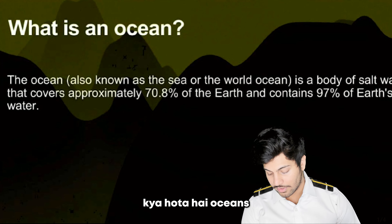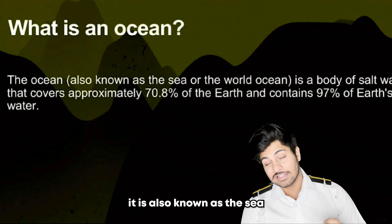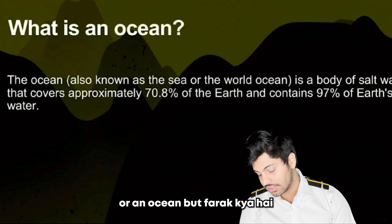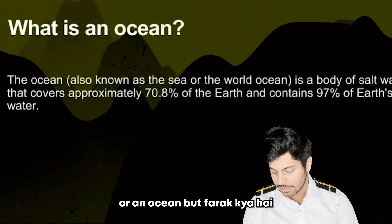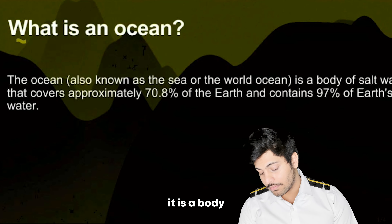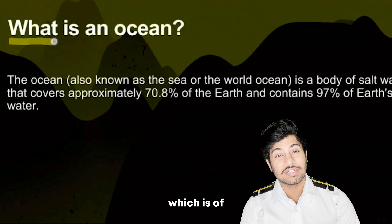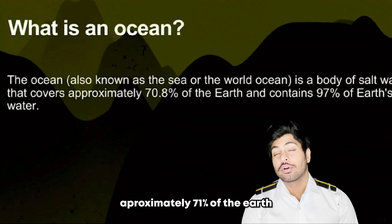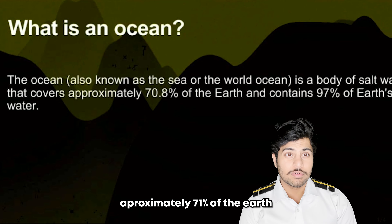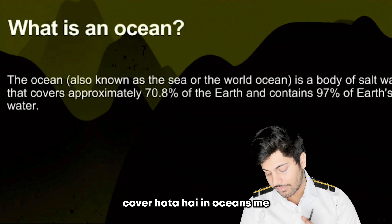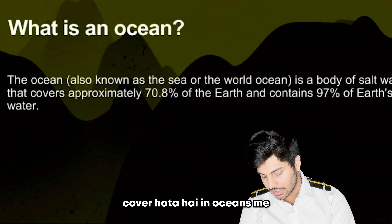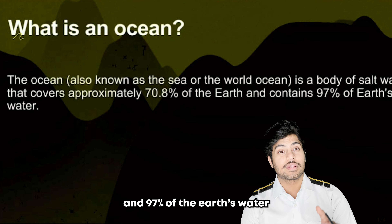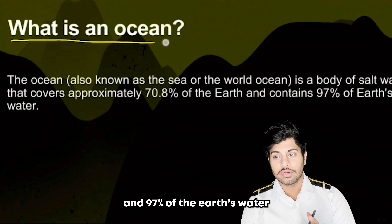What is Oceans? It is also known as the sea or an ocean, but it is different. It is a body of salt water — namak ka paani. Approximately 71% of the Earth is covered in Oceans.